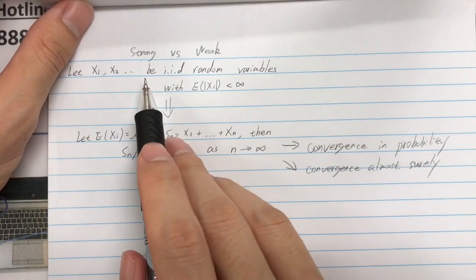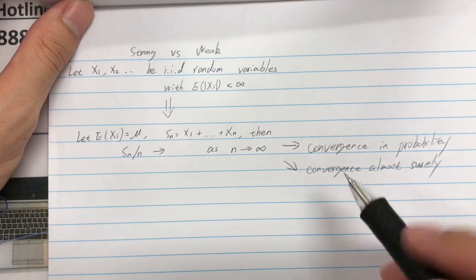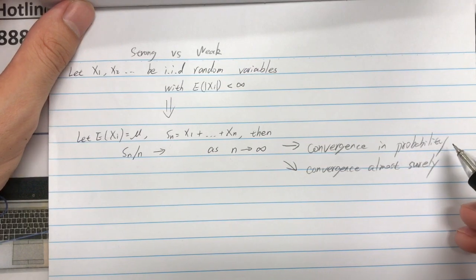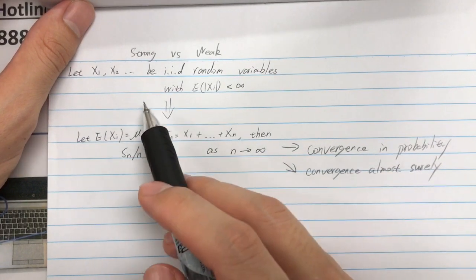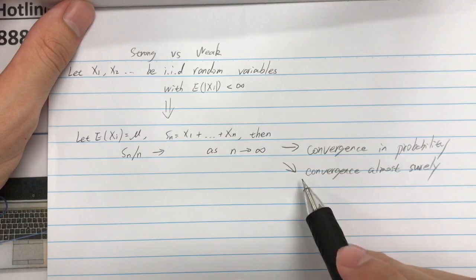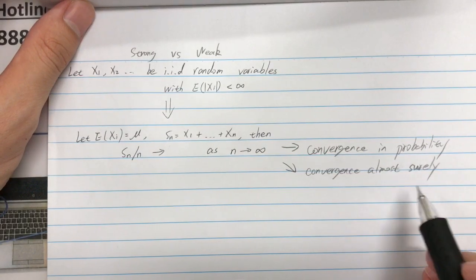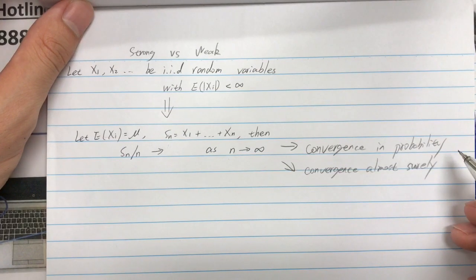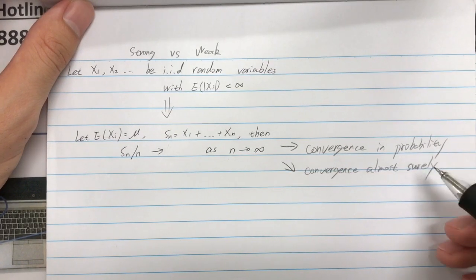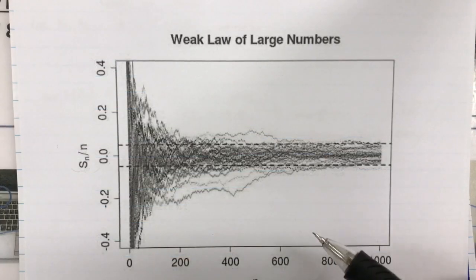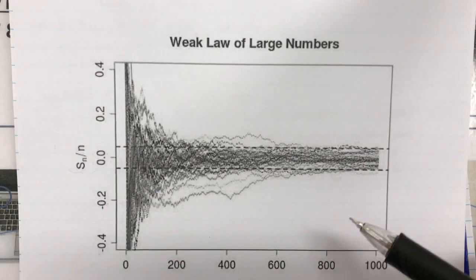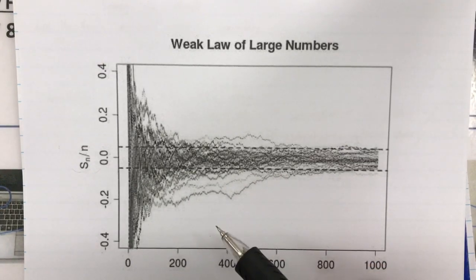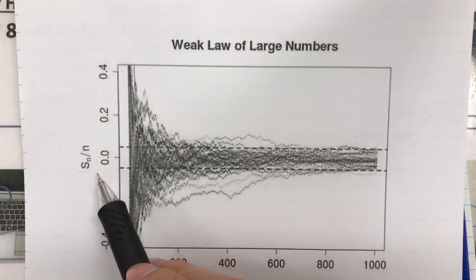The difference is here: the Weak Law of Large Numbers only requires the convergence to be in probability, whereas the Strong Law of Large Numbers requires the convergence to be almost surely, which is a stronger version. I will illustrate this with the following graphs. This graph is to illustrate the Weak Law of Large Numbers — I generated many realizations of the random variable S_n over n.